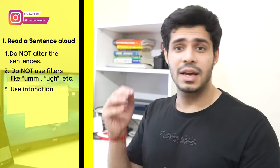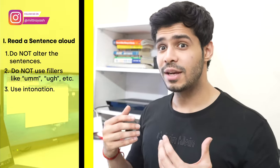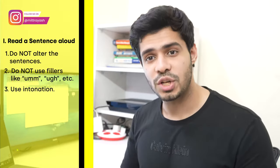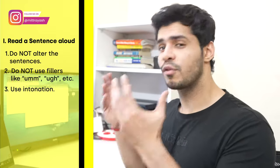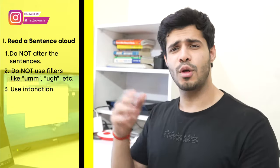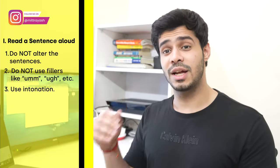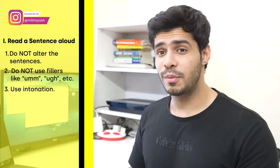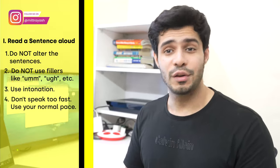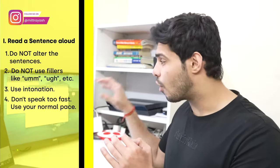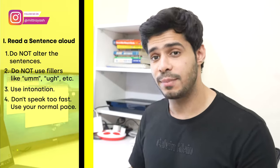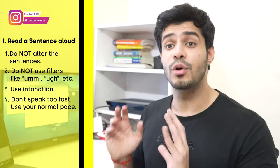Tip number three is to use intonation — the cadences in your voice, the way you speak sentences up and down. You have to master them. You can learn them from a native speaker or practice from YouTube videos. It's certainly something you'd be scored on and I highly recommend working on it. Tip number four: avoid speaking too fast. If you're going too fast just to beat the timer, trust me there are no extra points for finishing early. Try to be at your normal pace — the Duolingo test is really simple compared to TOEFL and IELTS and you'll have plenty of time.